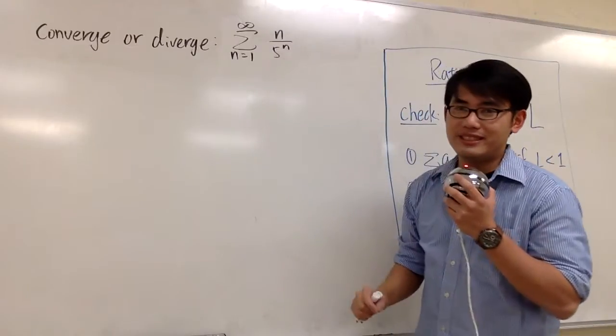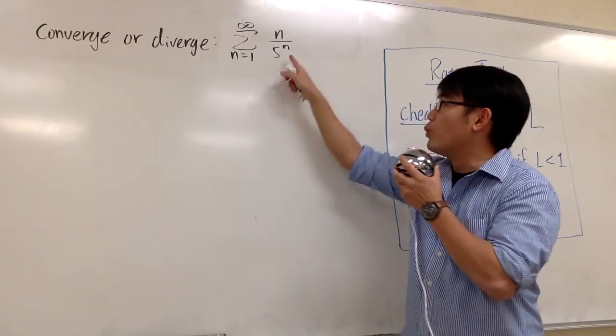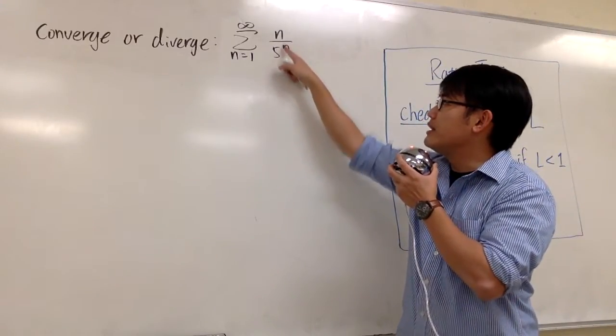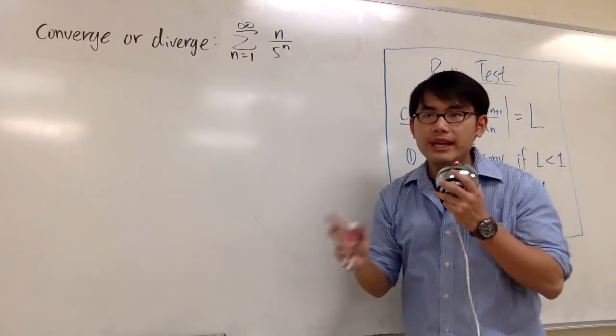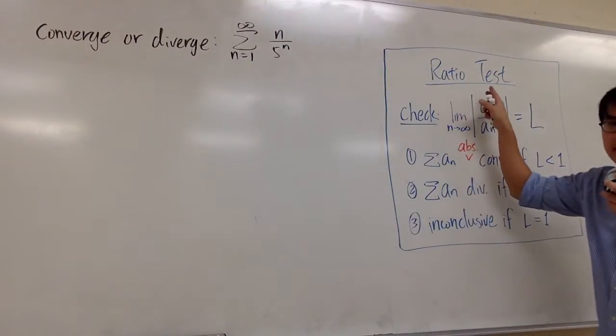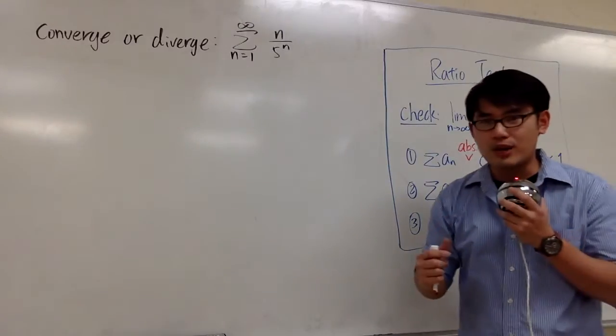This is not a geometric series, but because when we have phi to the n, the n is in the exponent, we can try to use the ratio test whenever the n is in the exponent. Give it a try.